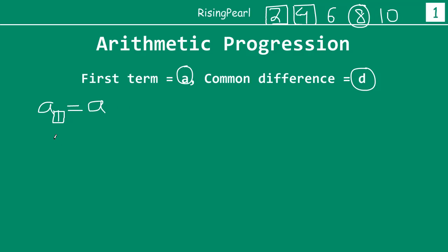The first term is A. Now let's write the second term. We know the definition of arithmetic progression is we take the last term and then we add the common difference to it. So for the second term, we take the first term A1 and we add the common difference to it. In other words, A2 is equal to A1 plus D, which is A plus D.